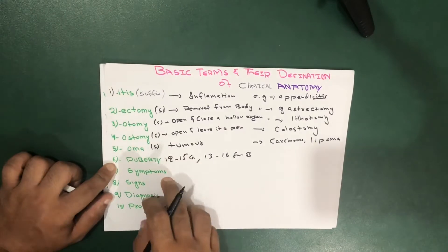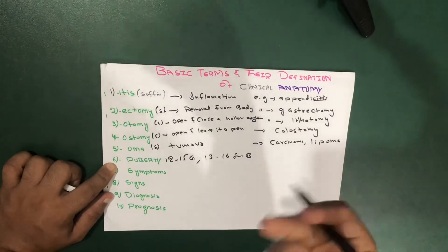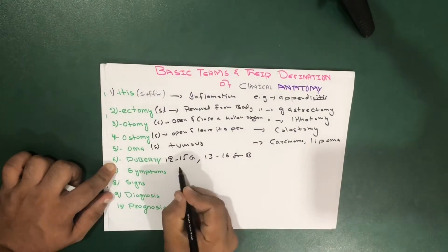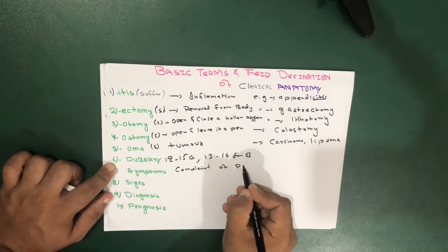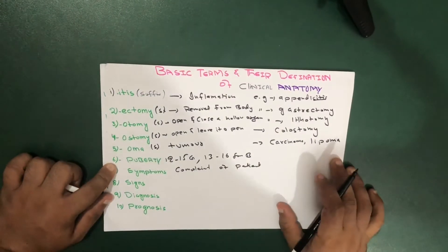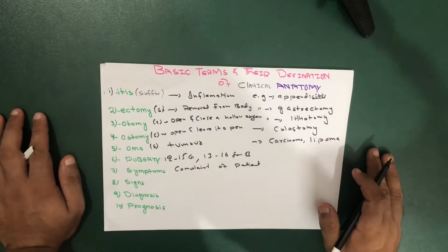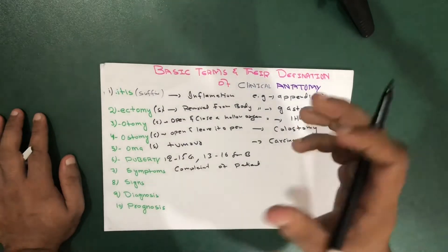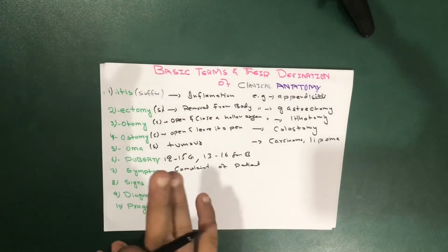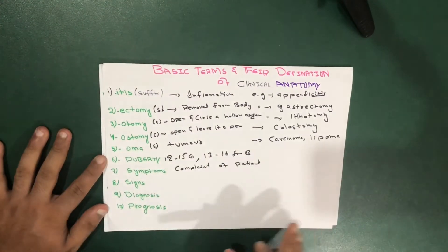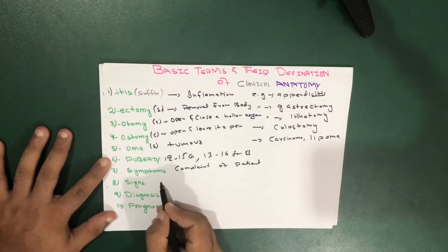Another definition is regarding symptoms. Symptoms are actually subjective complaints of a patient about his disease — what the patient tells you. For example, a patient comes in and says 'I have a headache, I feel nausea.' These things that a patient tells you are symptoms. But anything that a doctor notices is a sign — it's a physical sign, the objective findings of the doctor on the patient.